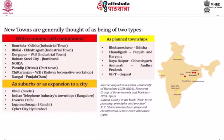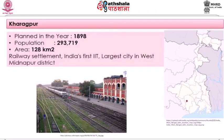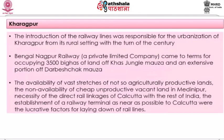Among the pre-independence new towns, Kharagpur was set up as a railway town in the year 1898. As per 2011, the population of Kharagpur is nearly 3 lakhs and the area is about 128 square kilometers. The town was set up in the Medinipur district in West Bengal, and the introduction of railway lines was responsible for the urbanization of Kharagpur from its rural setting into a town.